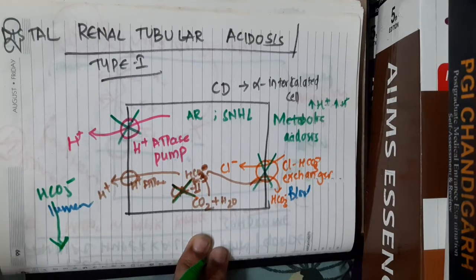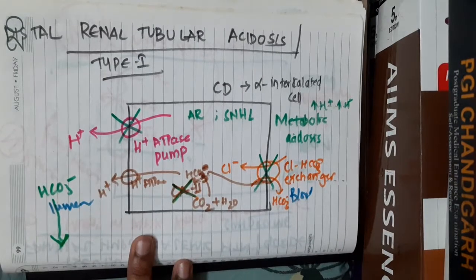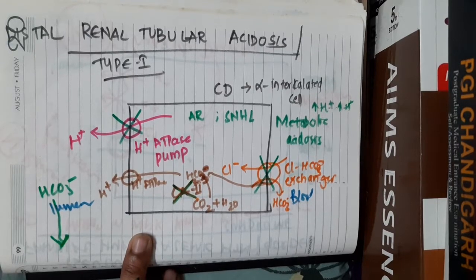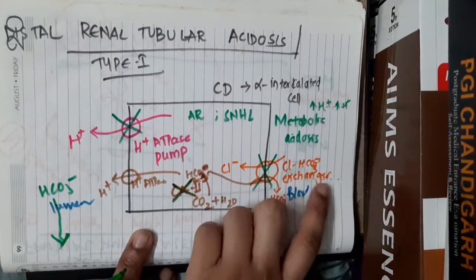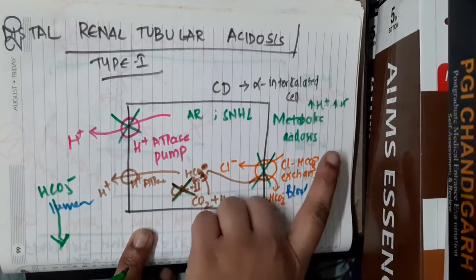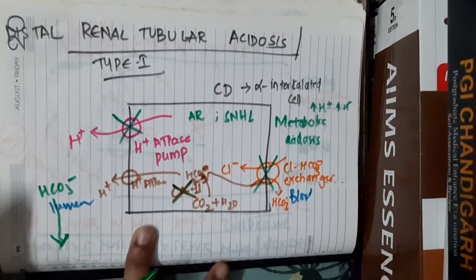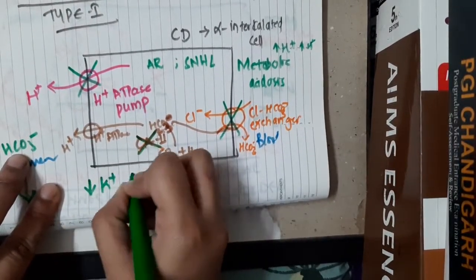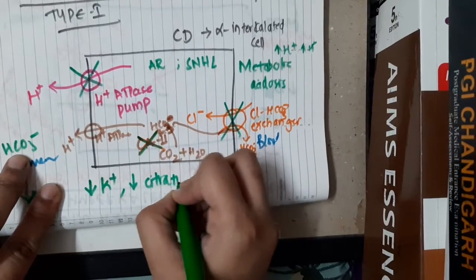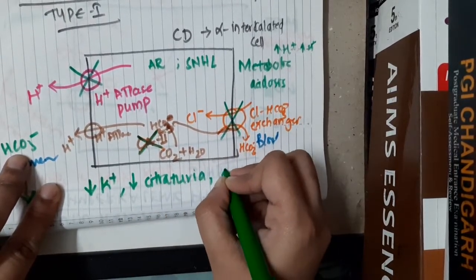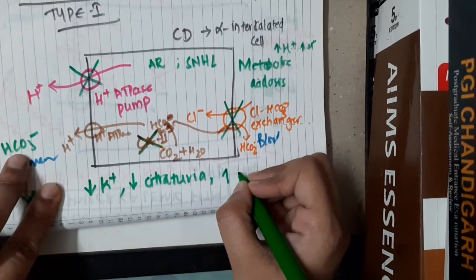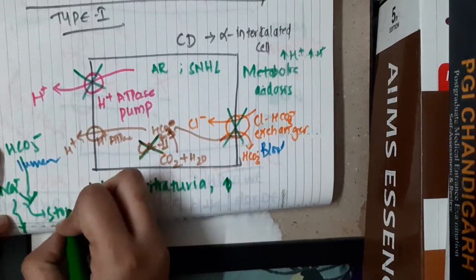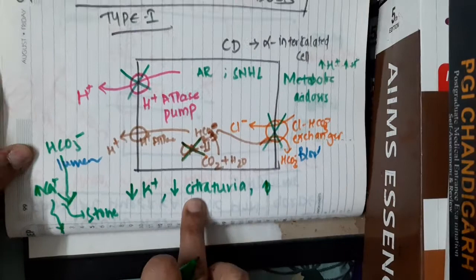Looking at the clinical features, patients present with metabolic acidosis, hypokalemia, hypocitraturia, and hypercalciuria — that is, increased calcium excretion in the urine — which results in stone formation, presenting as nephrolithiasis.